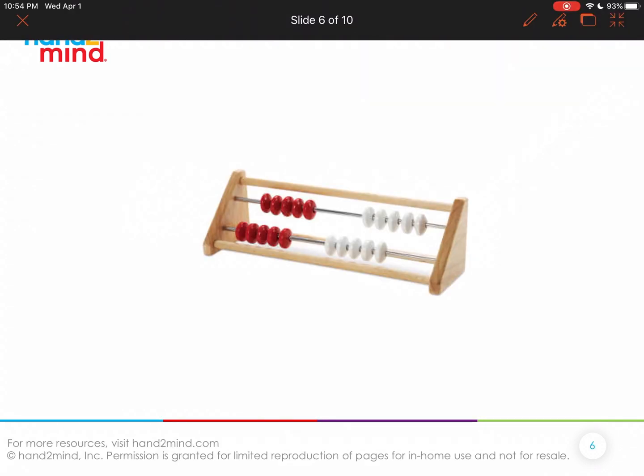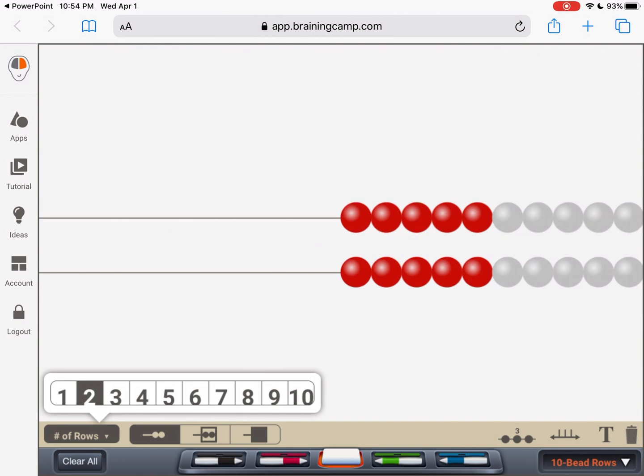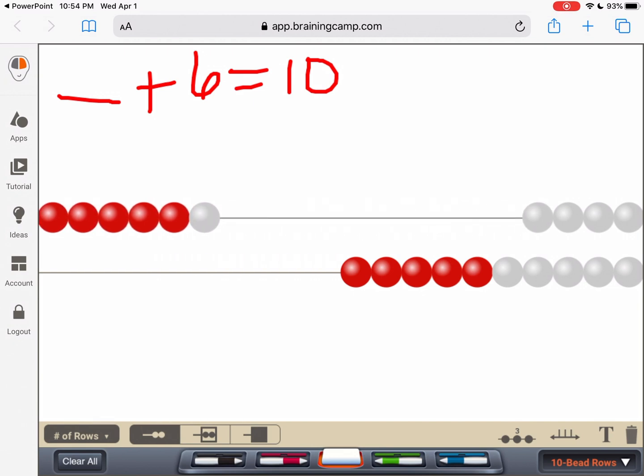So we're going to use a RekenRek to help us. If you have a RekenRek, you can use your RekenRek at home to do this. We're going to have our two rows. And the first thing we're going to do is write that problem. So we know that Chris had some in his bank, he found six, and now he has 10. So to solve this, I don't know how many he had, but I do know that he had six. And my job is to figure out what plus six equals 10.